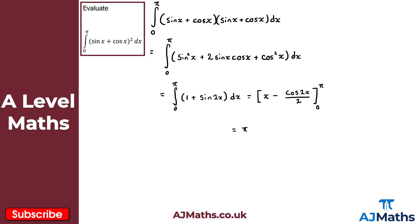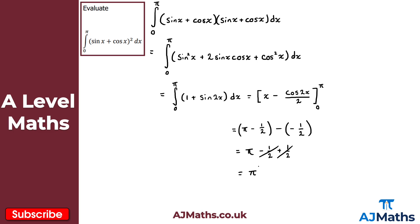Make sure you're working in radians. For the lower limit, substituting 0 gives 0 minus cos 0 over 2. Cos 0 equals 1, so the lower limit is minus one half. Subtracting: (pi minus one half) minus (minus one half) gives pi minus one half plus one half. The halves cancel, and the final answer is simply pi.